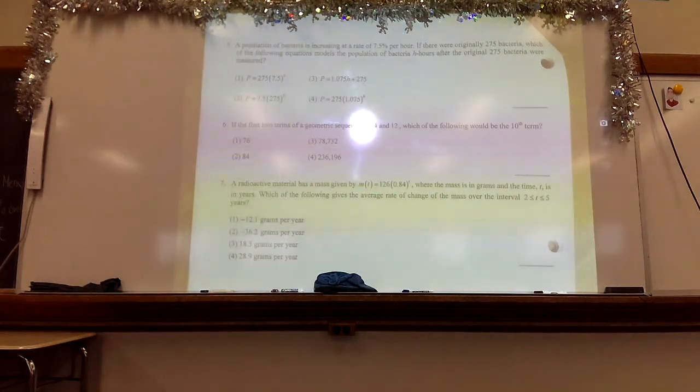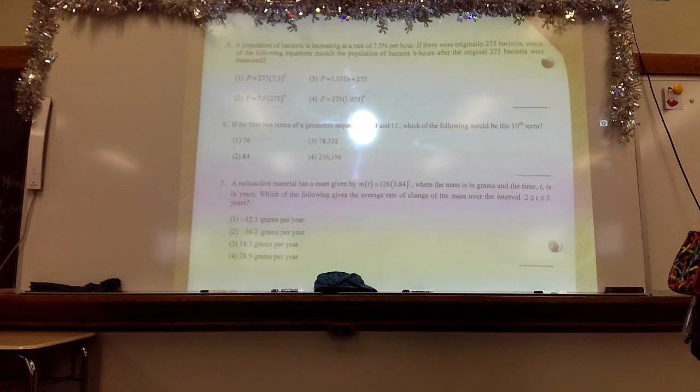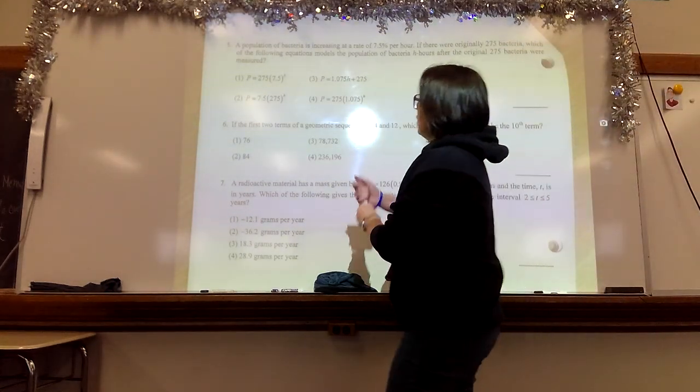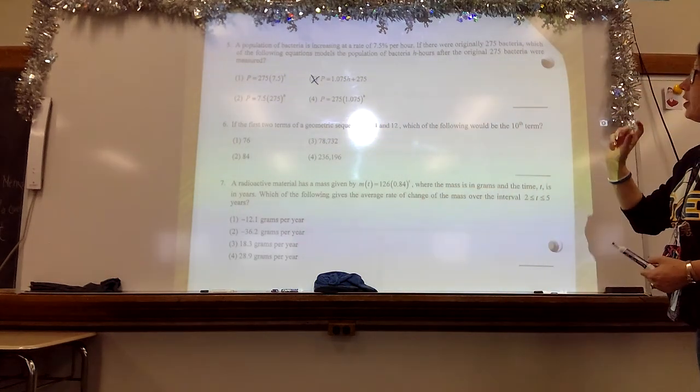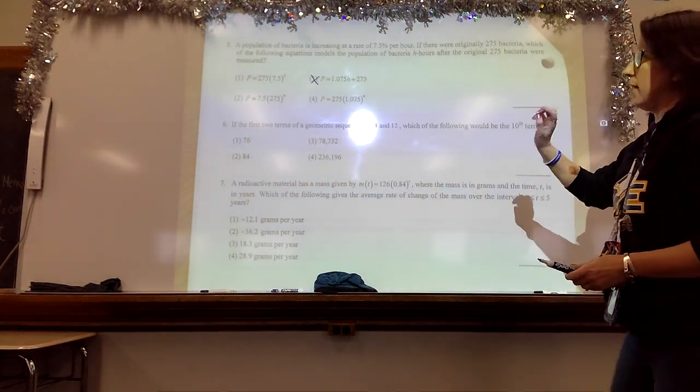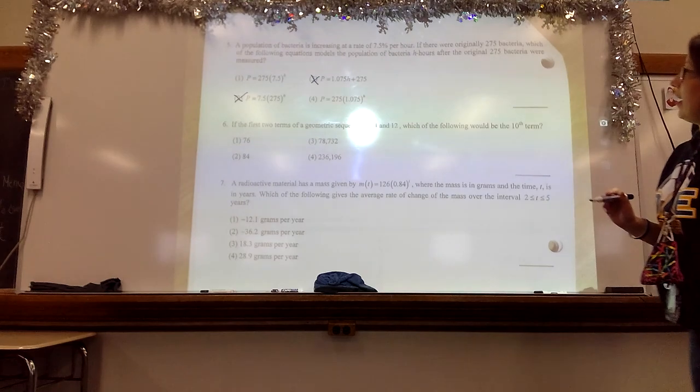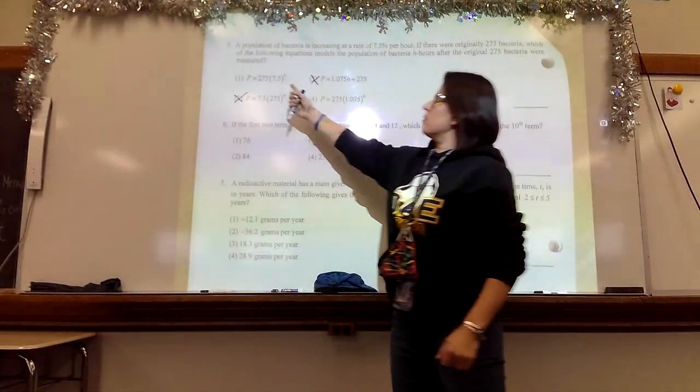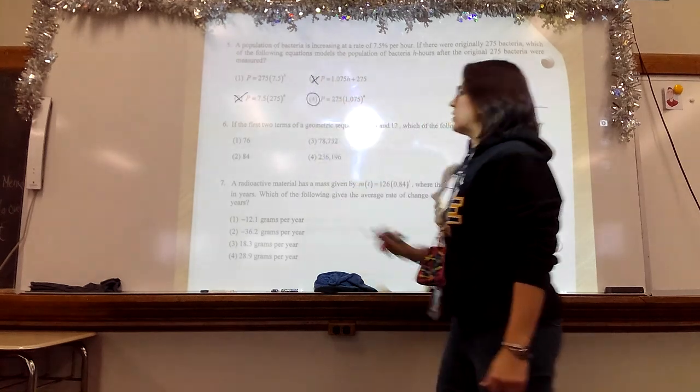Number five, the population of bacteria is increasing at a rate of 7.5% per hour. If there are originally 275 bacteria, which of the following equations models the population of bacteria after its original 275 bacteria were measured? Then we know that the starting amount, that 275, has to be the thing in front of the parentheses. And then, do we use the strict percent or do we need to do something with it? Well, they're increasing, so we need to do something with it. The correct answer is number four.